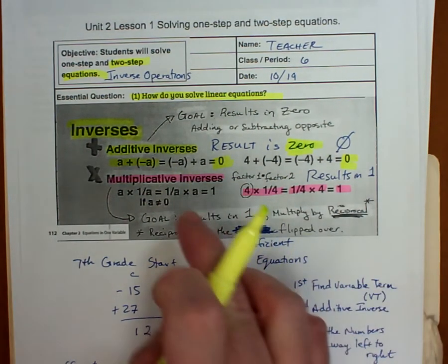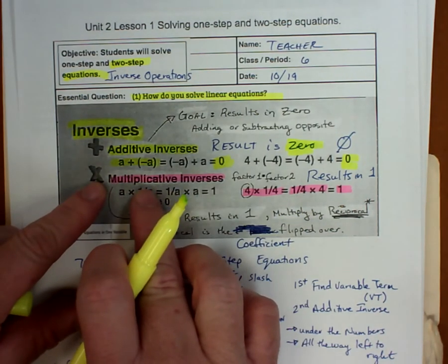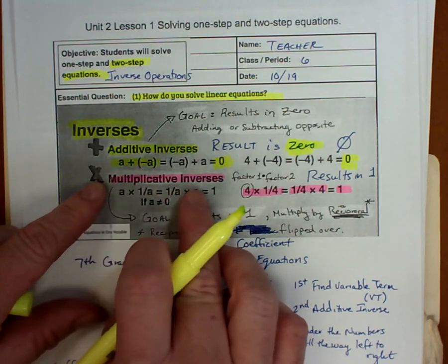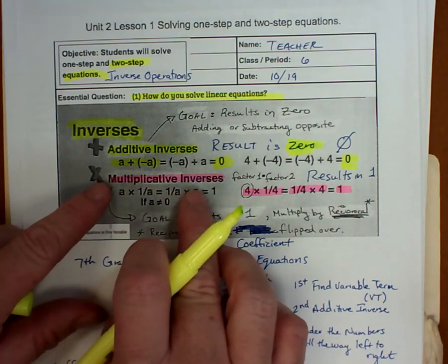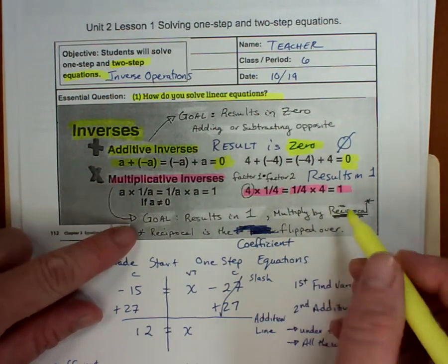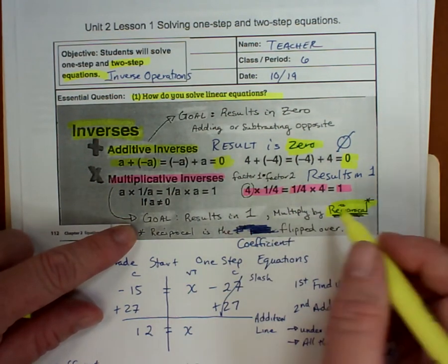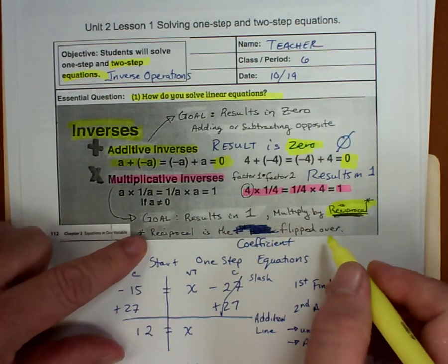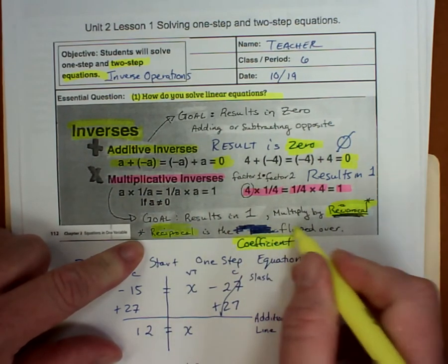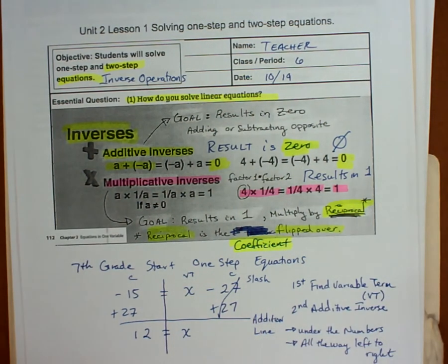Then you have a situation where you will have a number in front of the variable. That number is called the coefficient. You're going to multiply by what we call the reciprocal. When that coefficient is a fraction, the reciprocal is just the coefficient flipped over.